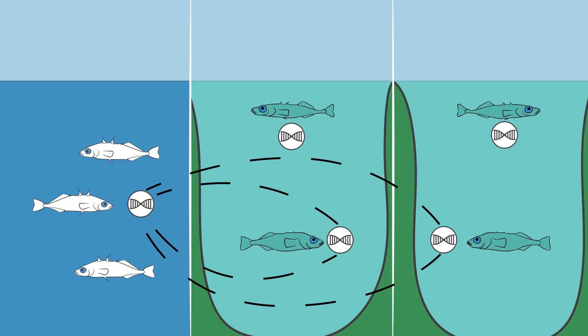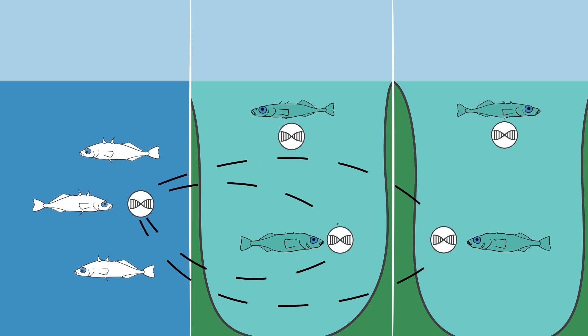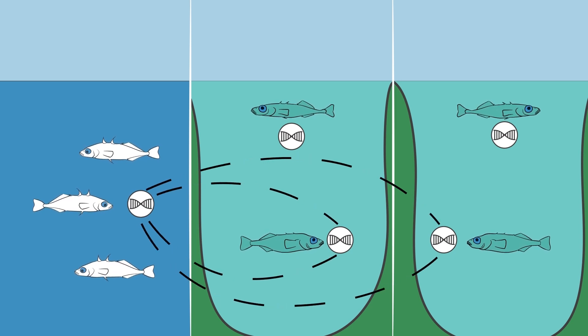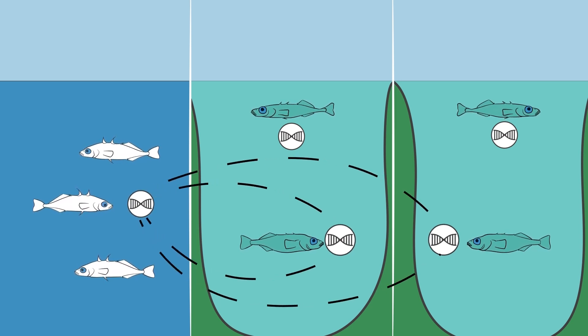No existing freshwater stickleback population is millions of years old. So our hypothesis is that these old variants are kept in circulation by persistent gene flow between marine and freshwater populations.